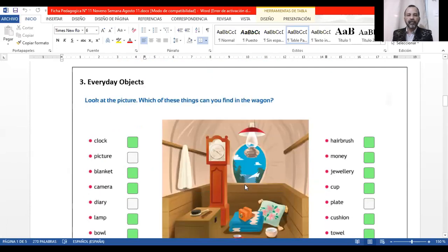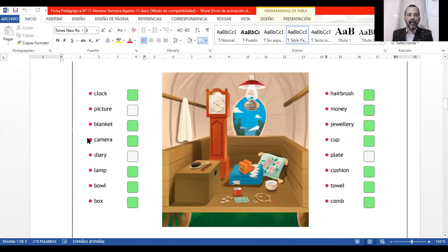Everyday objects: you have to recognize the objects that you find in the image. For example, we have clock, picture, blanket, camera, diary, lamp, bowl, box, hairbrush, money, jewelry, cup, plate, cushion, towel, and comb. You've got to identify the objects you find in the image.